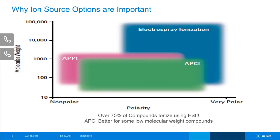APPI stands for Atmospheric Pressure Photoionization. We won't specifically be talking about that one. We're going to be focusing on how you can switch from ESI, which is the predominant technique used for LC-MS, to APCI.